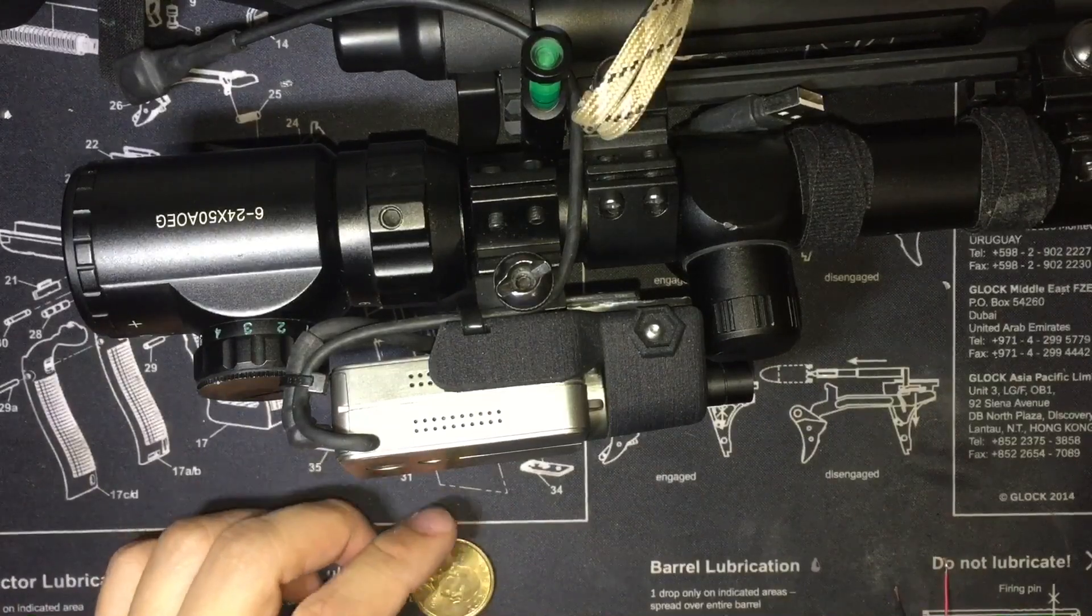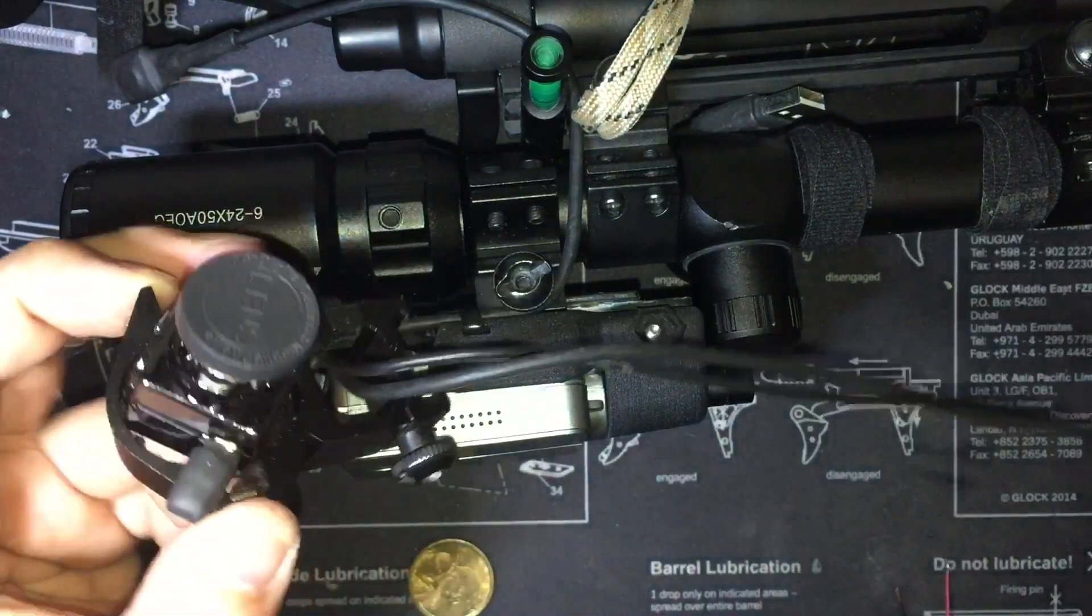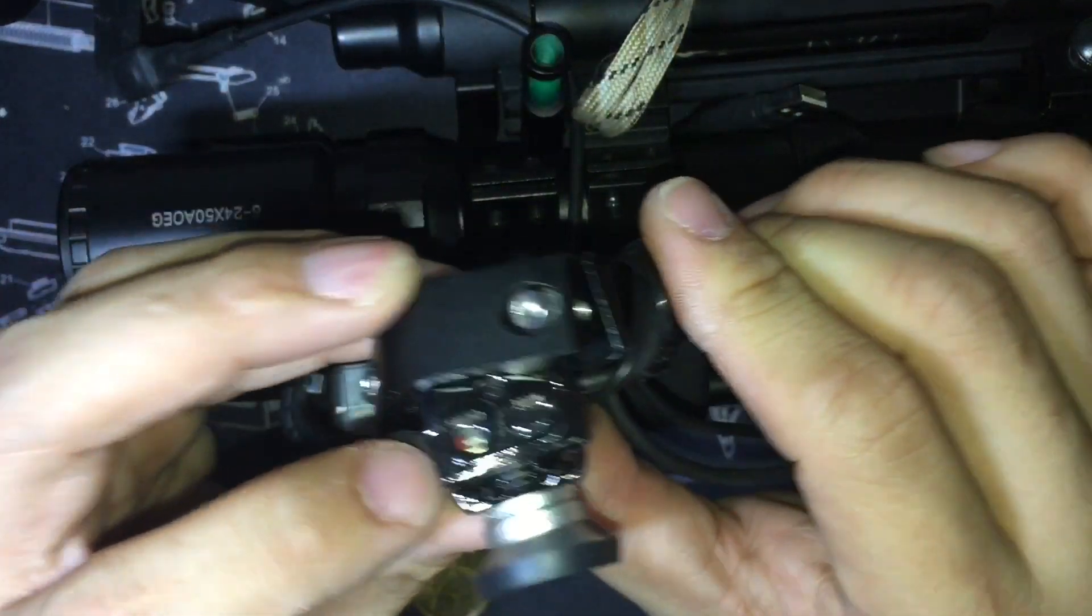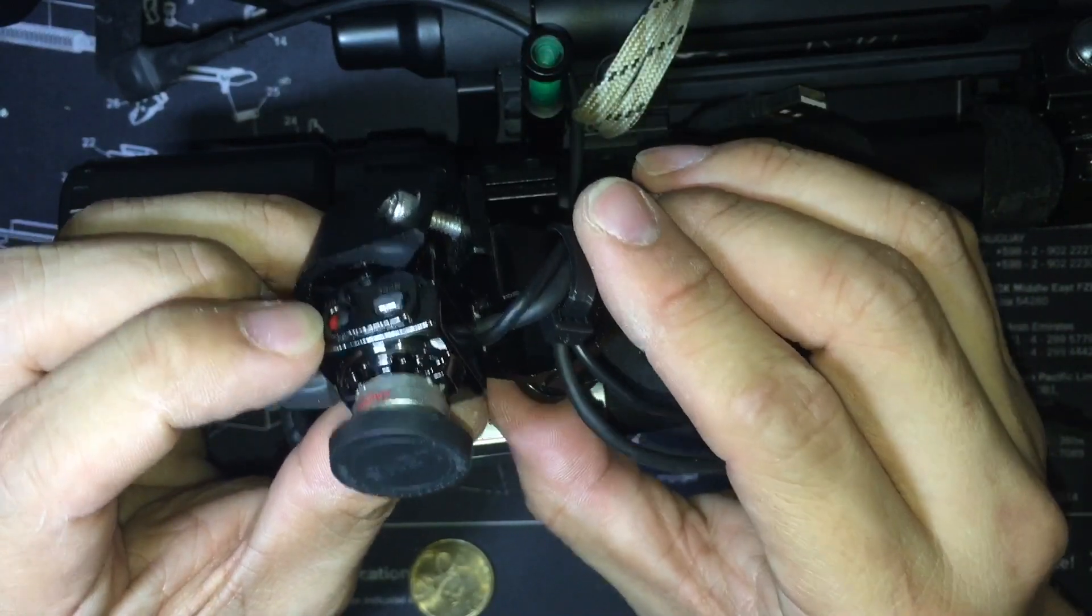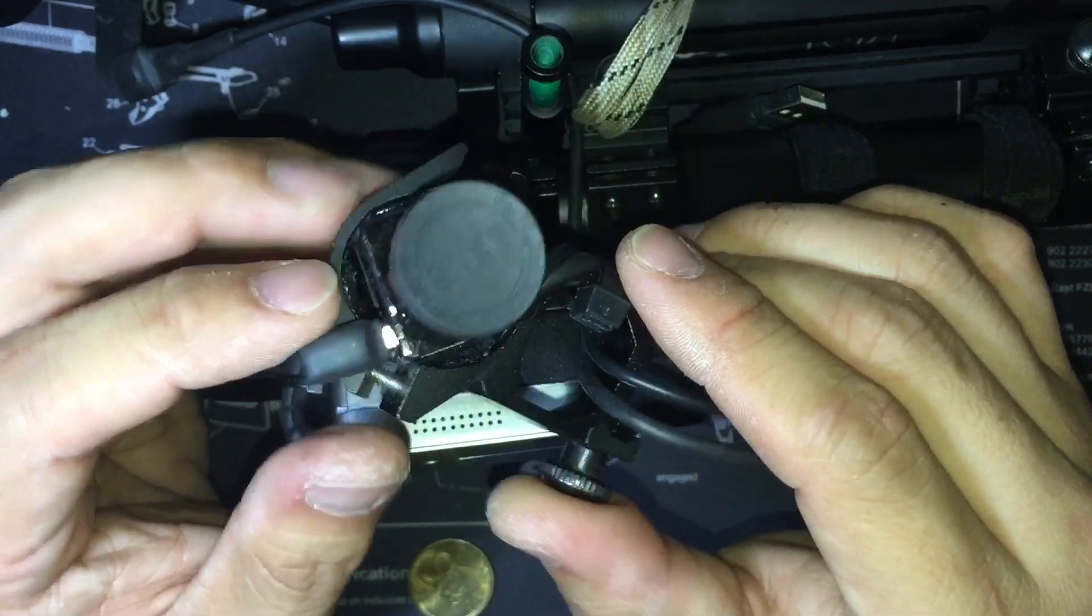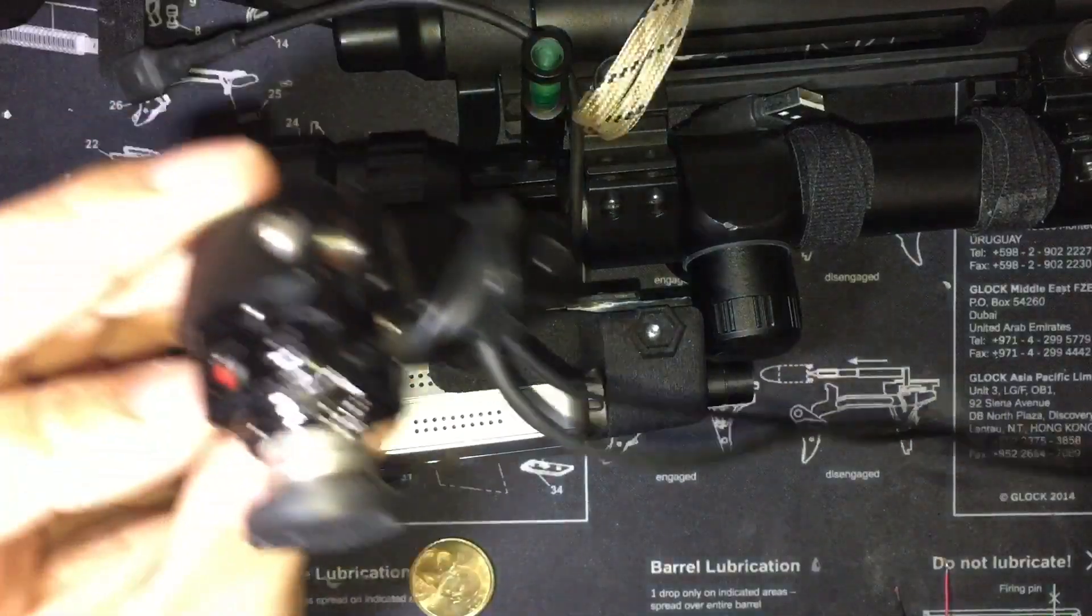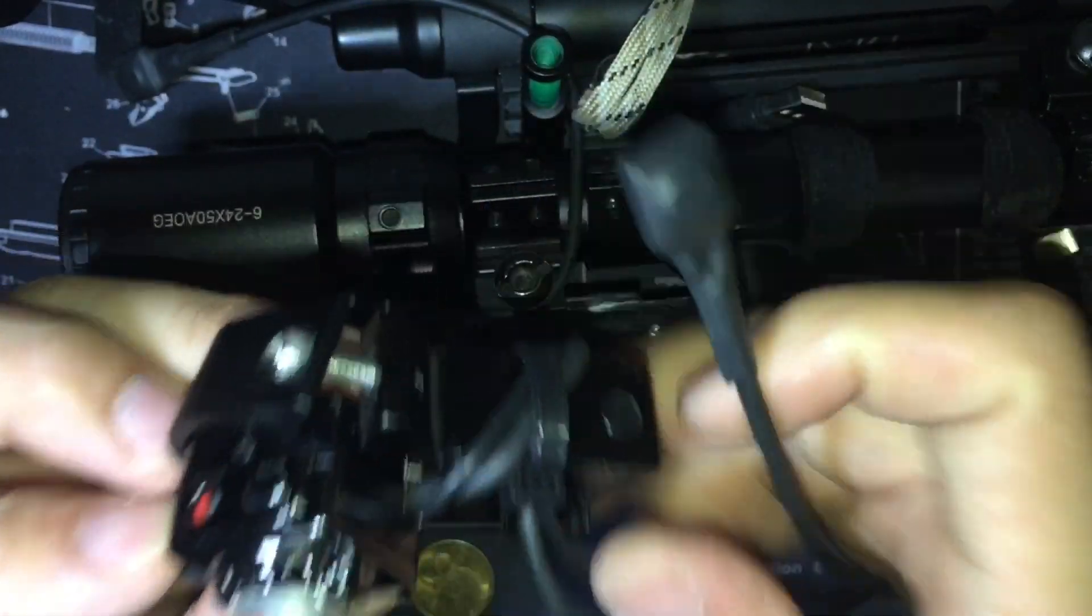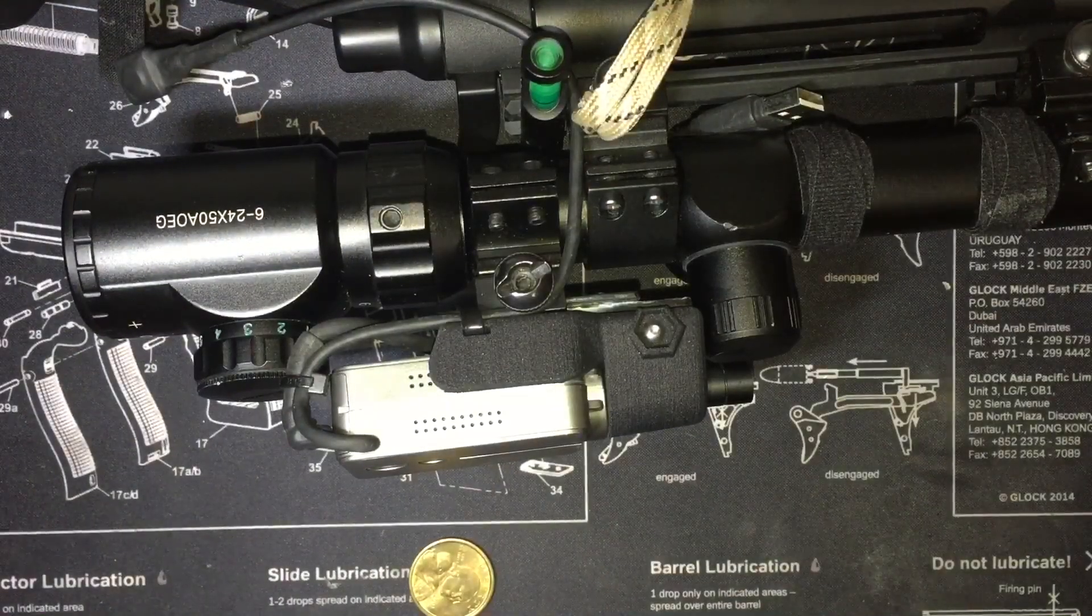That's pretty much it. You can do that to small selfie cameras, anything that has a momentary switch in there. See, I removed the button from the momentary switch. The switch is still in there but I removed the button and then soldered onto there so I can have wires coming out to another switch here.